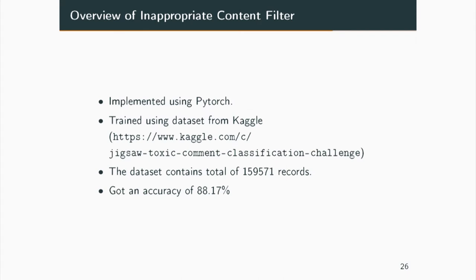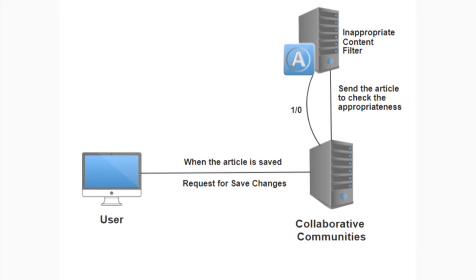For an overview: the filter is implemented using PyTorch. The dataset used to train the model was obtained from Kaggle — it contains a total of 159,571 records — and we achieved an accuracy of 88.17%. For integration into collaborative communities, when a user requests to save changes, the collaborative community server sends a request to the Node server where the inappropriate content filter is running, and it sends back either 0 or 1 based on the appropriateness of the article.